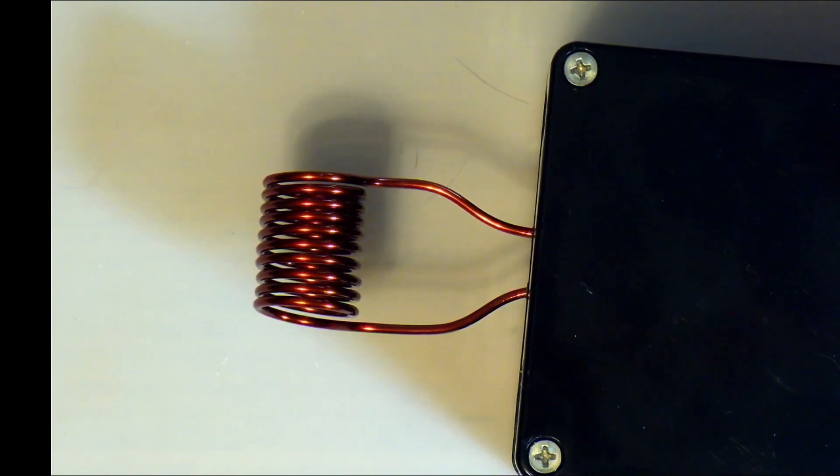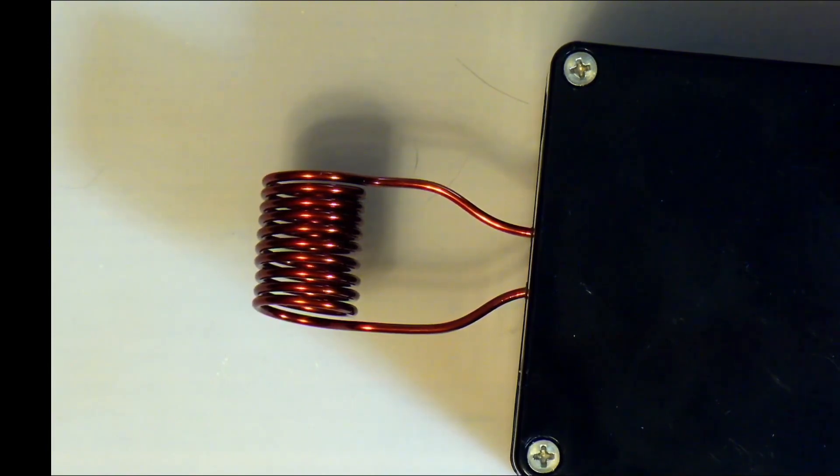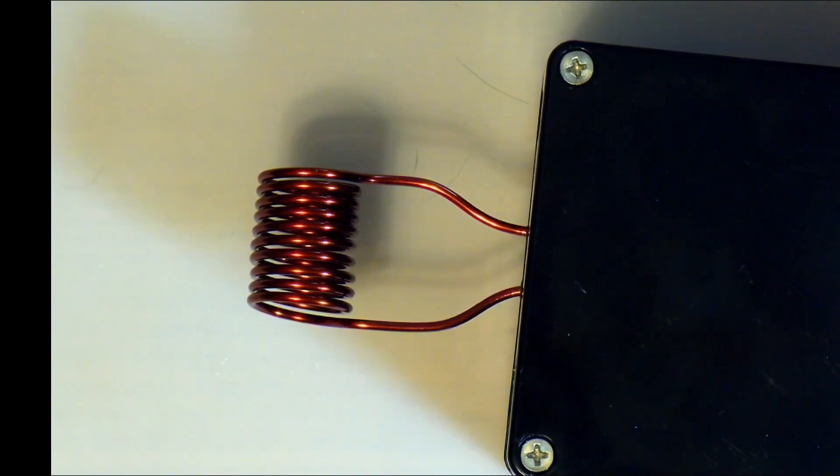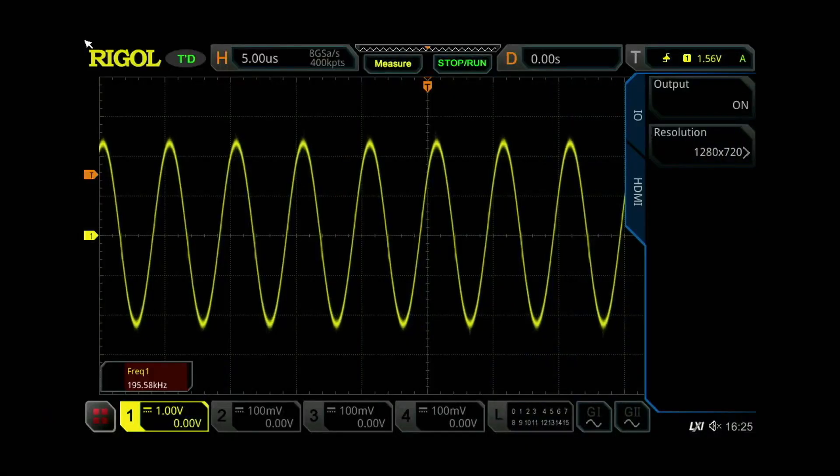Let's have a look what the frequency is on it. I'm going to shut it off. Alright. Let me have a look. Okay, so here we are measuring the frequency of the oscillator there on the coil. And it says it's 197 odd kilohertz.